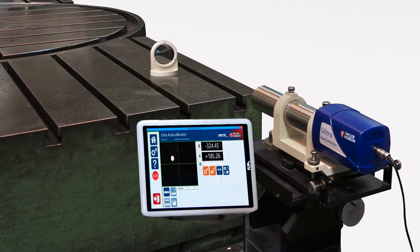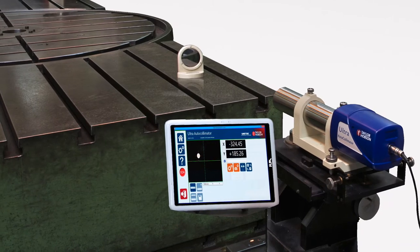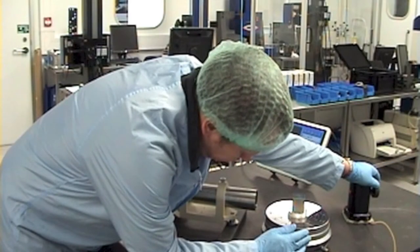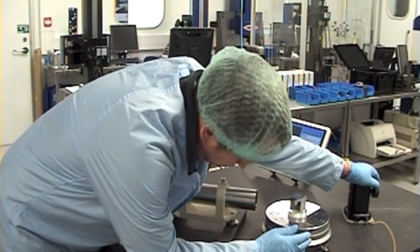Now before we start measuring we need to check the fixturing, the environment, the orientation and tracking, and the alignment.